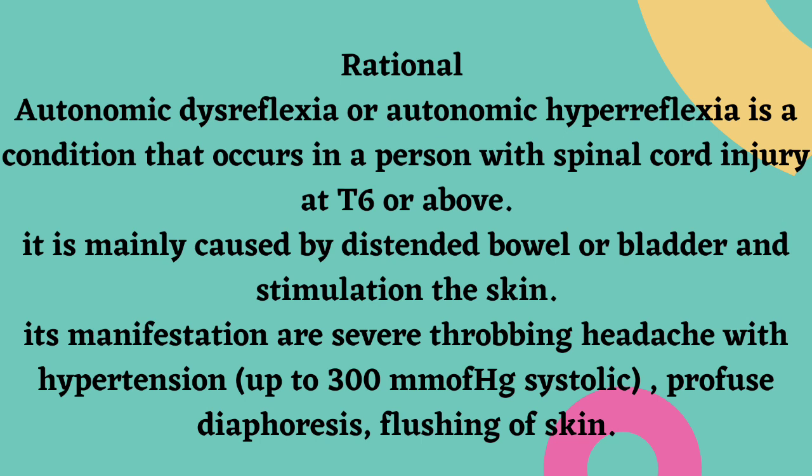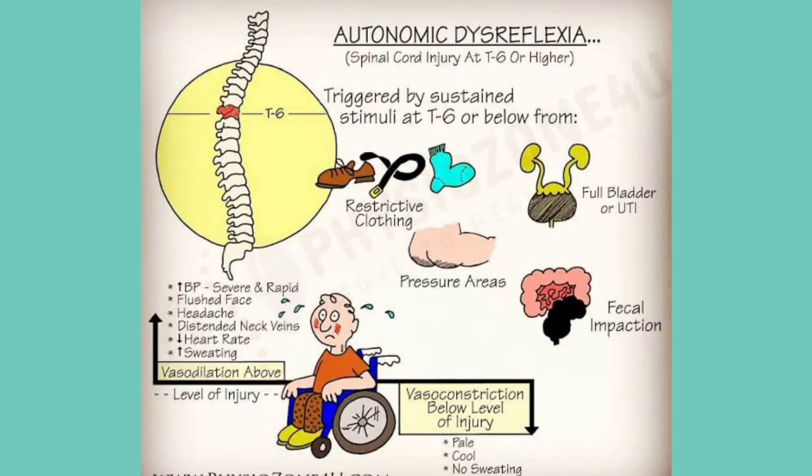Autonomic dysreflexia is mainly caused by a distended bowel or bladder and also skin stimulation. Manifestations include severe throbbing headache with hypertension up to 300 mmHg systolic blood pressure, profuse diaphoresis, flushing of skin, and many other manifestations. To understand this condition, you need to know its pathology.